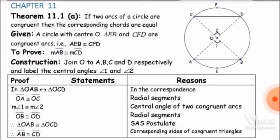Moving towards the proof: we check the correspondence between triangle OAB and triangle OCD. In both triangles, side OA is congruent to OC, because both are radial segments of the same circle and are therefore equal.